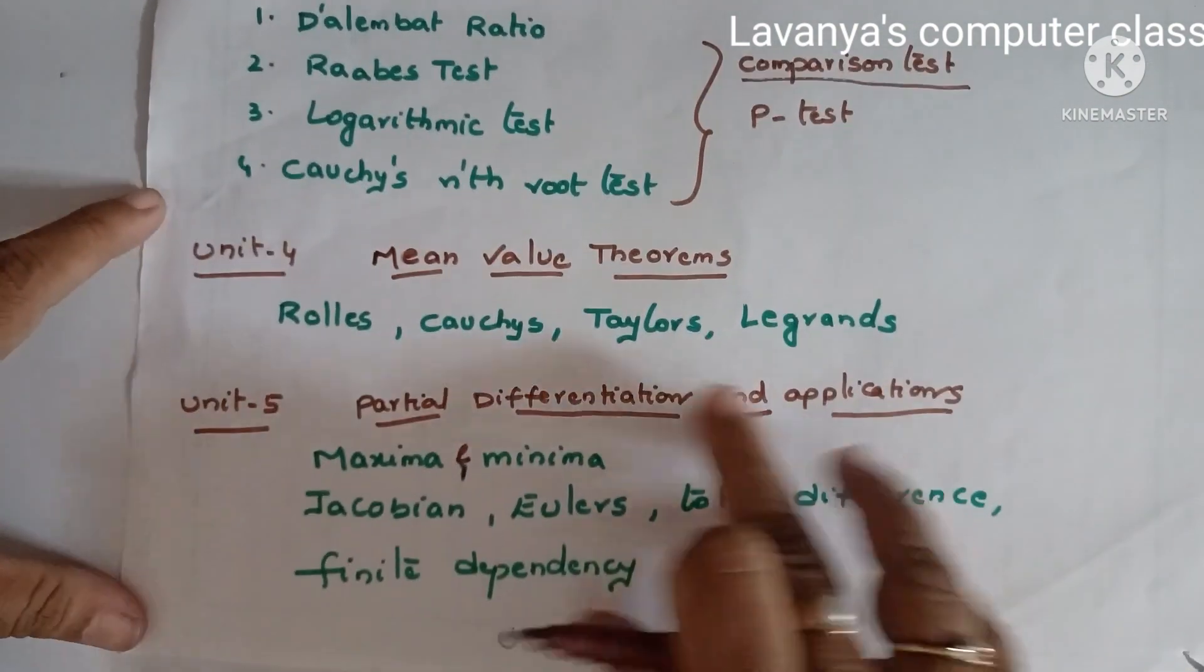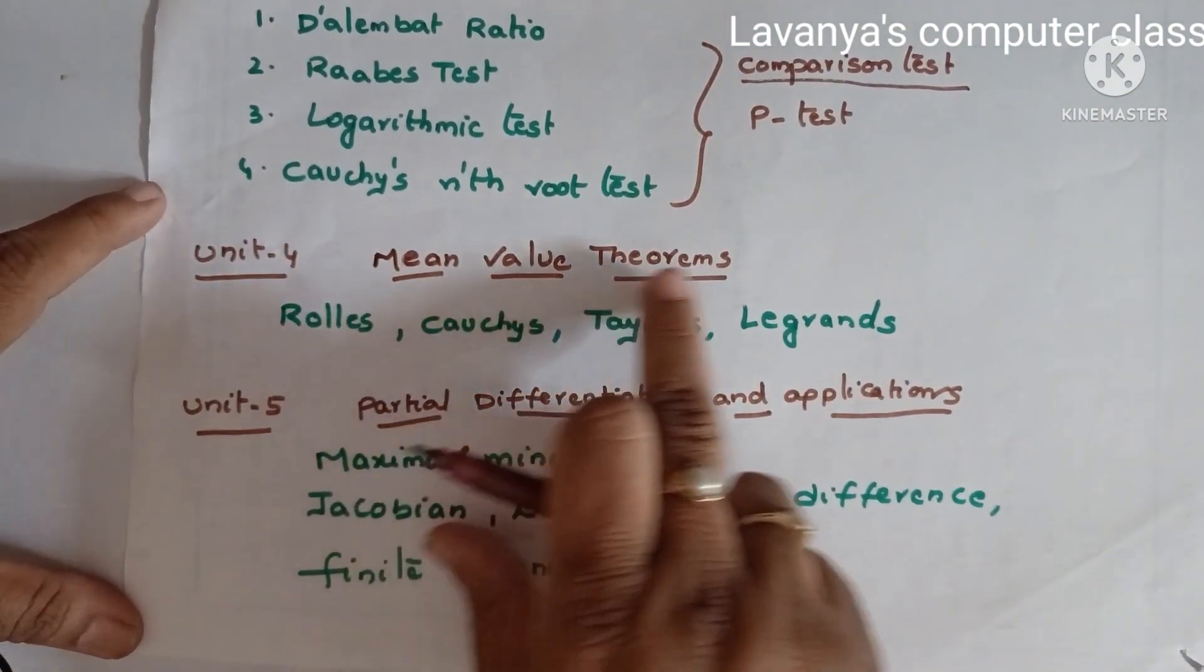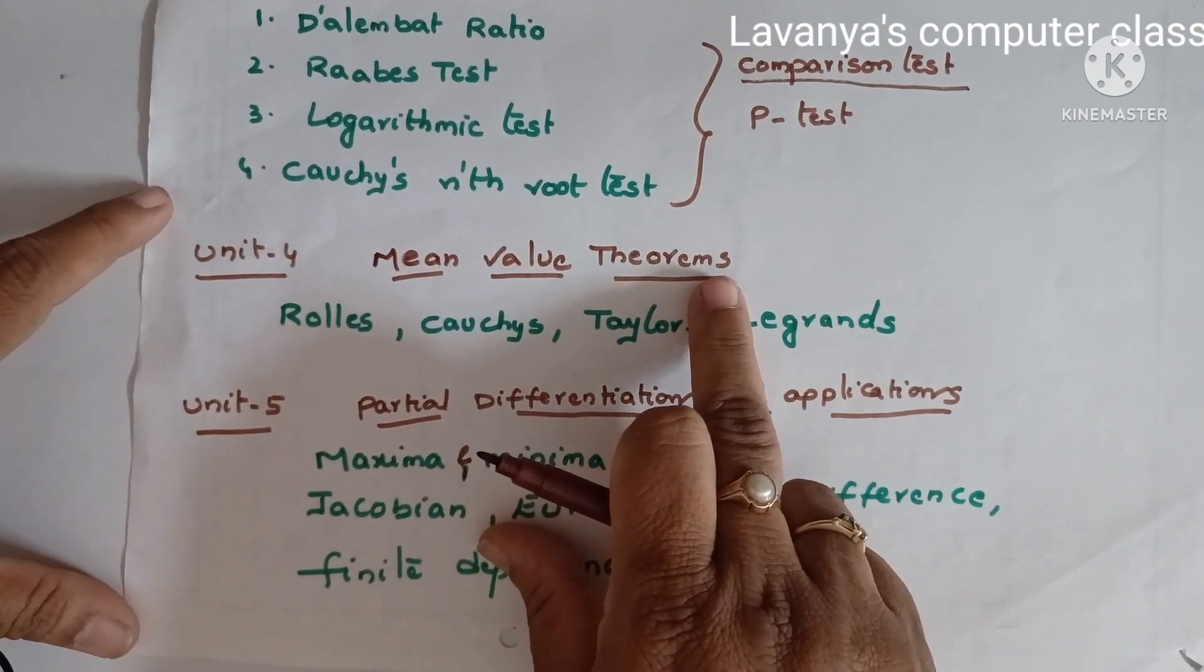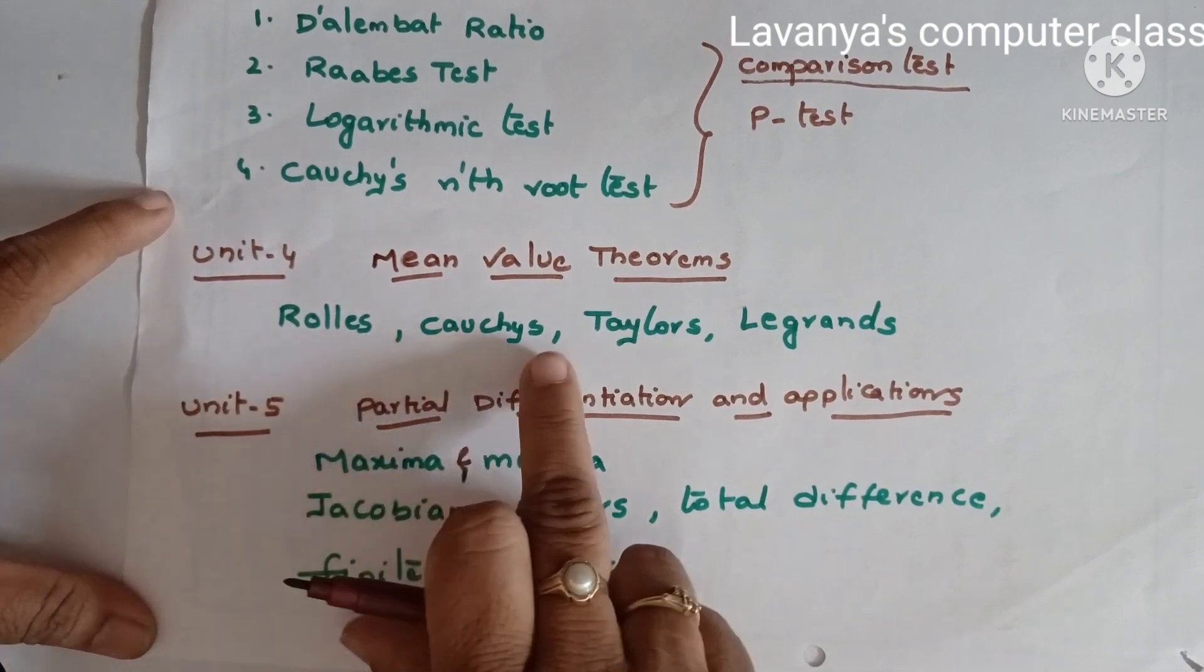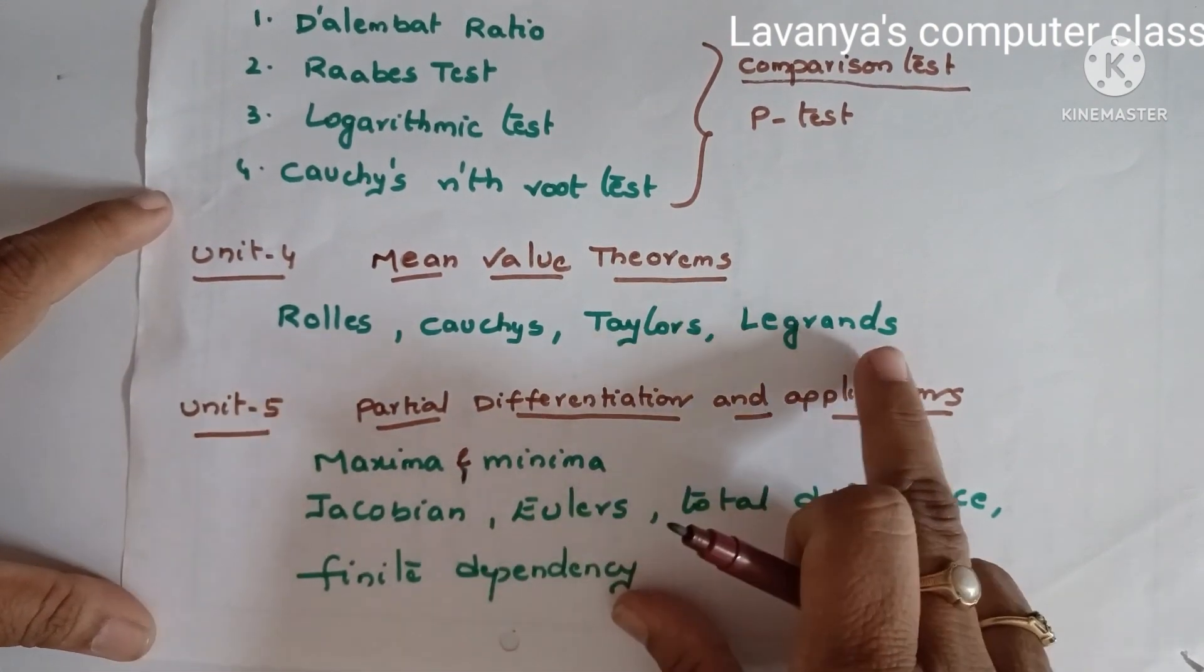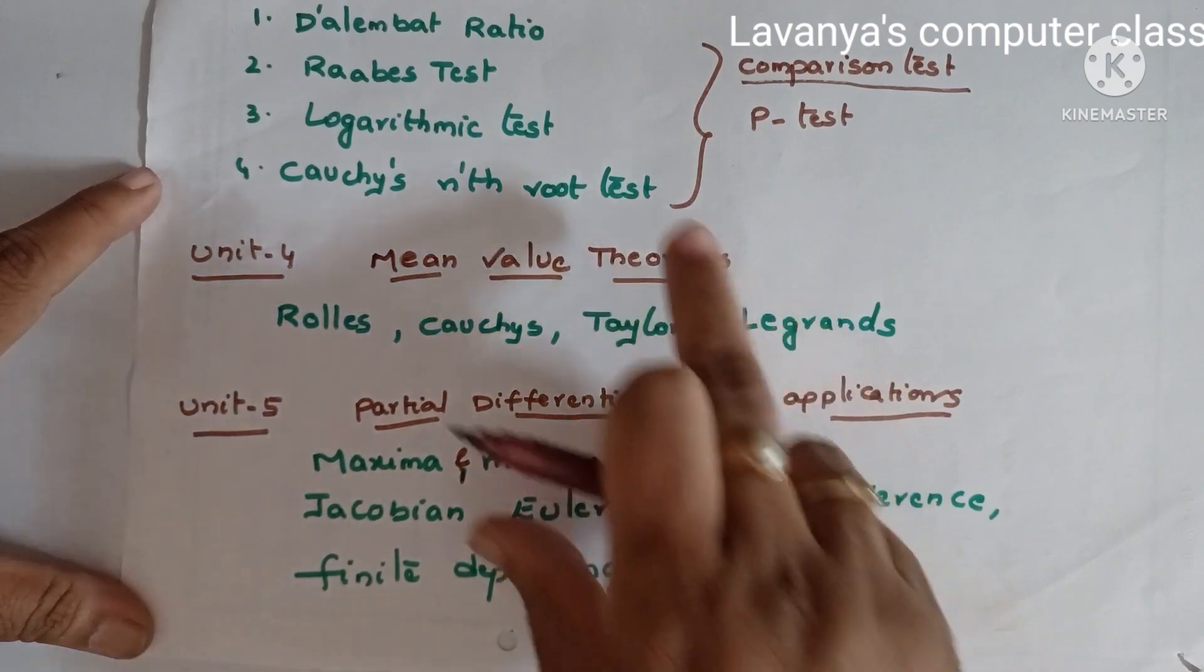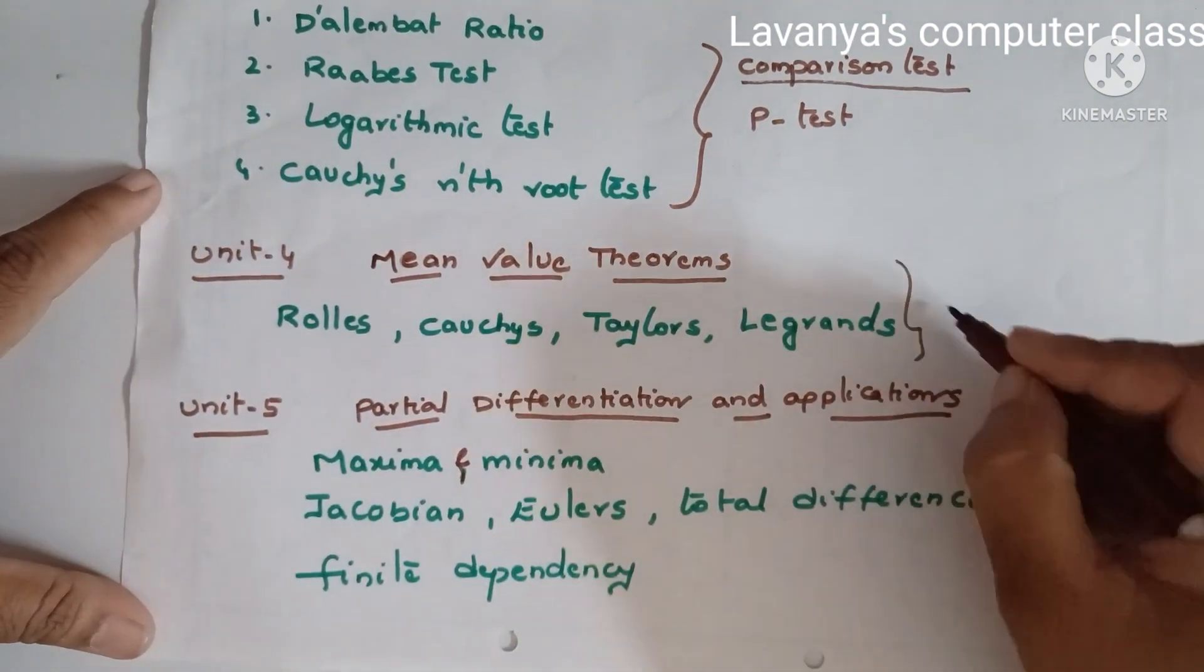Important, then unit four, small one only. In these also, mean value theorems. The mean value theorems, no theorems are there, all are problems only. Rolle's, Cauchy's, Taylor's, and Lagrange's problems. In these also one question is compulsory coming.